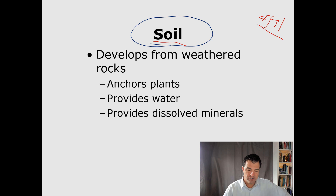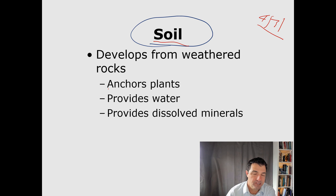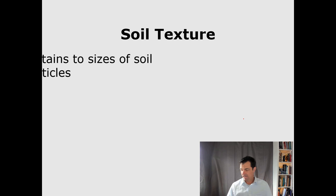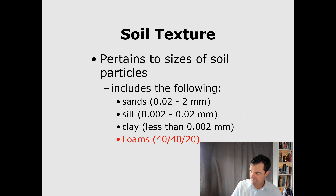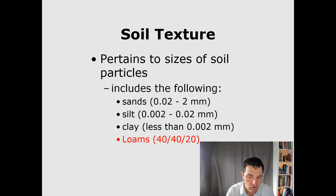Soil — basically dirt — is where most plants anchor. The roots of the plant are where they absorb water and other nutrients they need, with the exception of things like carbon dioxide, which typically come from the leaves. So the soil has some important properties: it helps anchor the plant, provides water, and provides dissolved minerals.